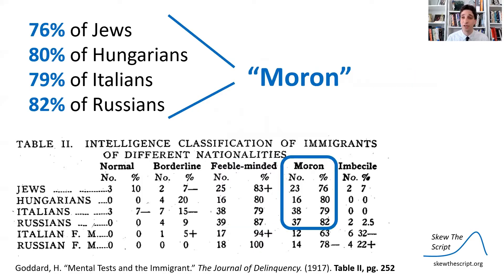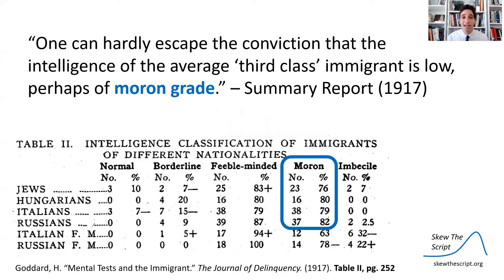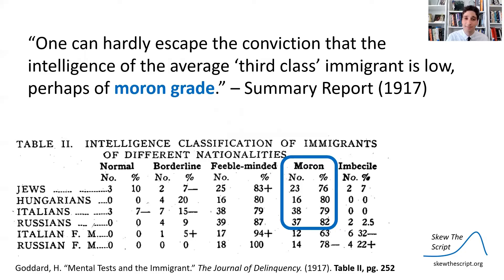and 87% of Russians immigrating to the US were quote-unquote feeble-minded according to their IQ tests, and these proportions were found to be quote-unquote morons. The authors came to this conclusion eventually: 'One can hardly escape the conviction that the intelligence of the average third-class immigrant is low, perhaps of moron grade.' Now, I'm a bit skeptical of these results, maybe partly because I'm a descendant of one of those mostly moron-grade Jews who immigrated to the United States in the early 1900s.